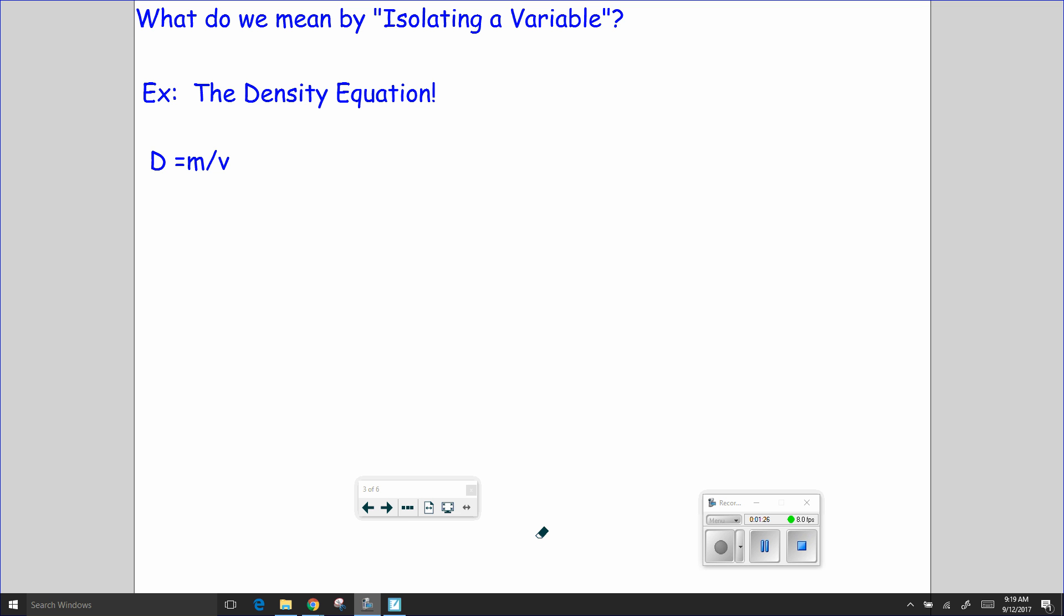So what do we mean by isolating a variable? Let's take a really simple equation, the density equation. Density is defined as how much matter there is in a given amount of space, or density equals mass divided by volume.